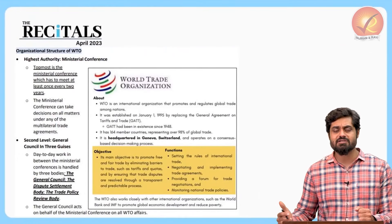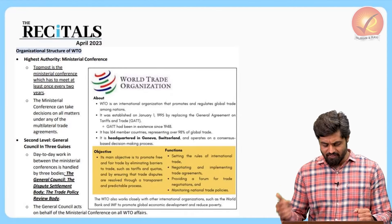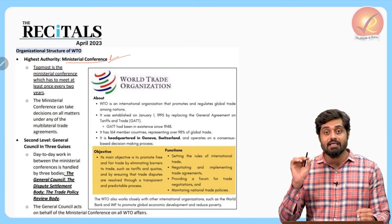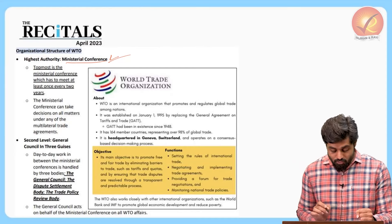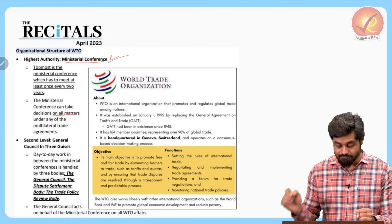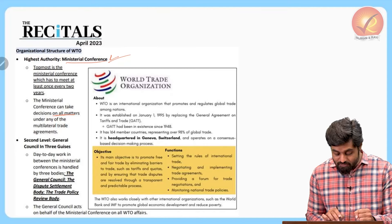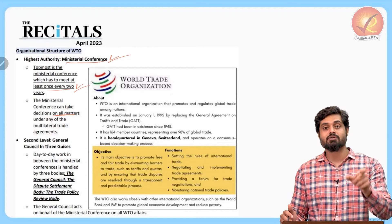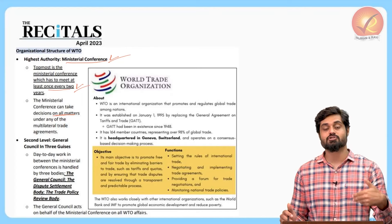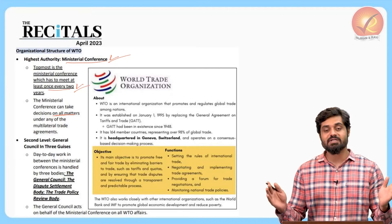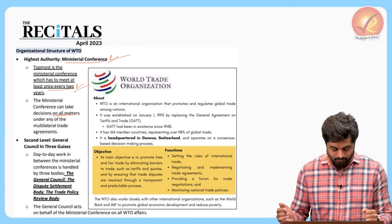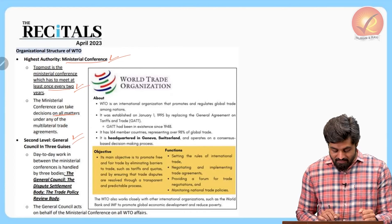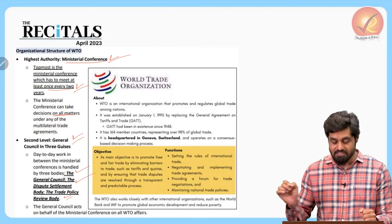Regarding WTO's organizational structure, the Ministerial Conference is the highest decision-making body with authority to decide on all matters, and it must meet at least once every two years. The second level consists of General Councils in three guises: the General Council, the Dispute Settlement Body, and the Trade Policy Review Body.